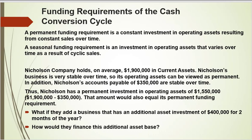So the next question then is, how do we finance this cash conversion cycle? There are two kinds of funding. Permanent funding is the constant investment in operating assets that we need to run the business over time. Seasonal funding is what's required to take care of those periods during the year where we have excess sales or sales growing more than other times, and we need to cover that excess amount of operating assets needed during those increased periods.